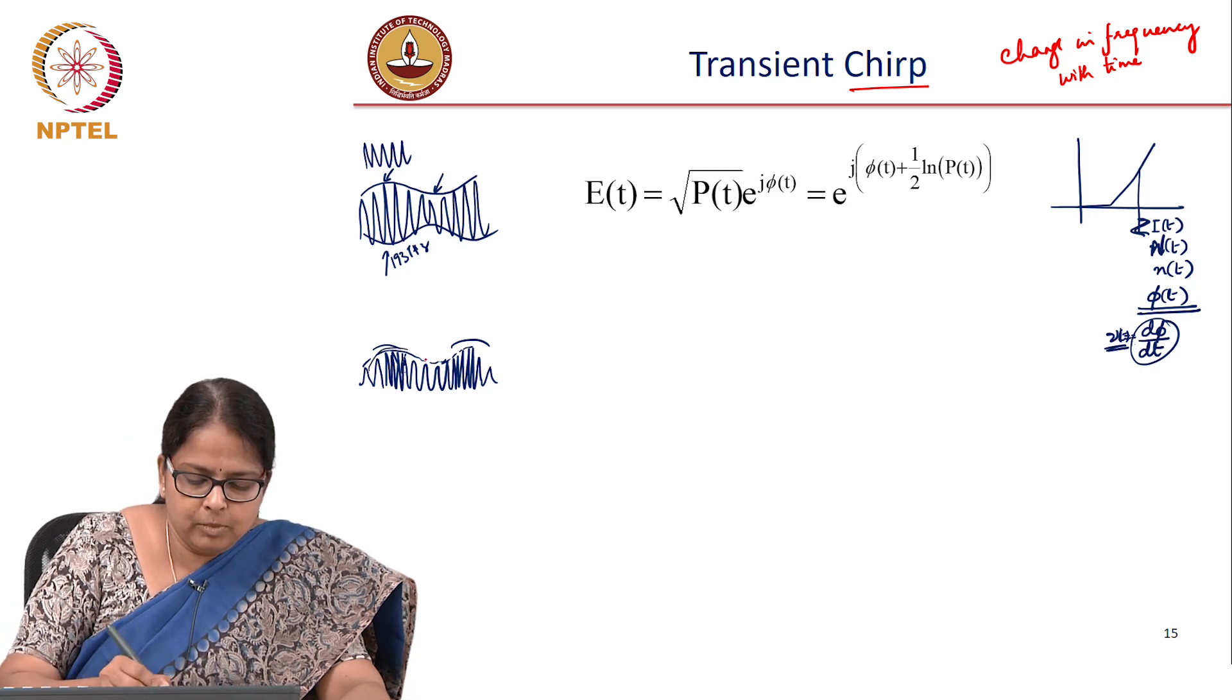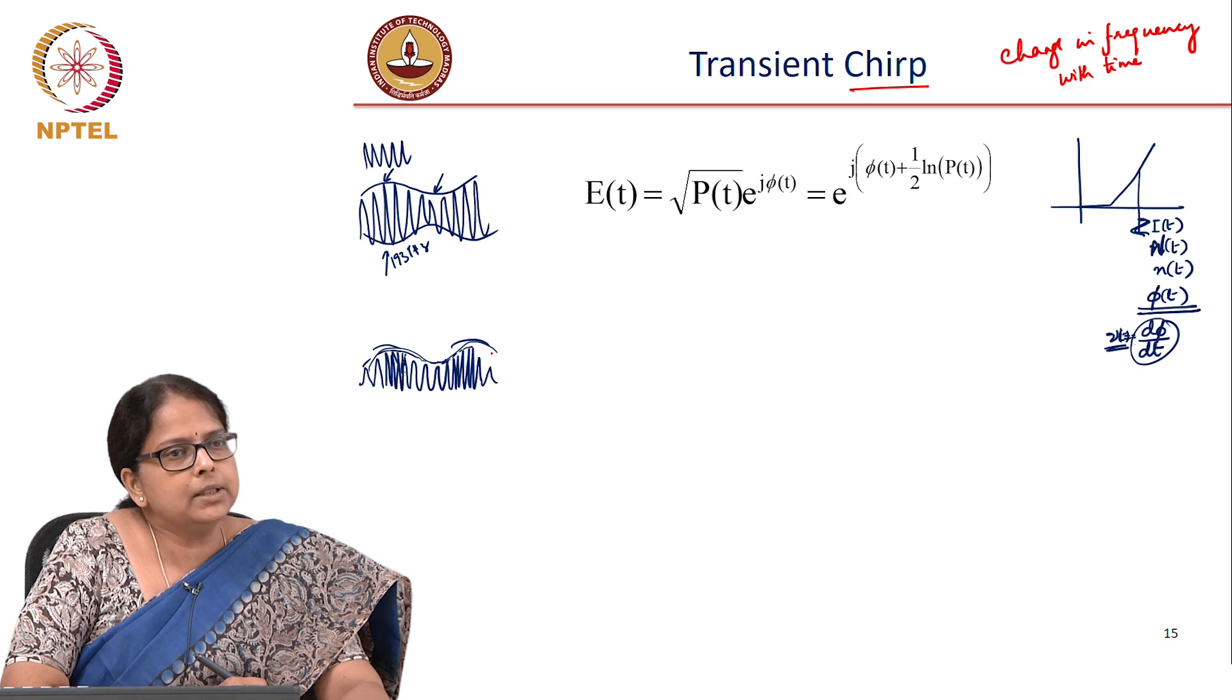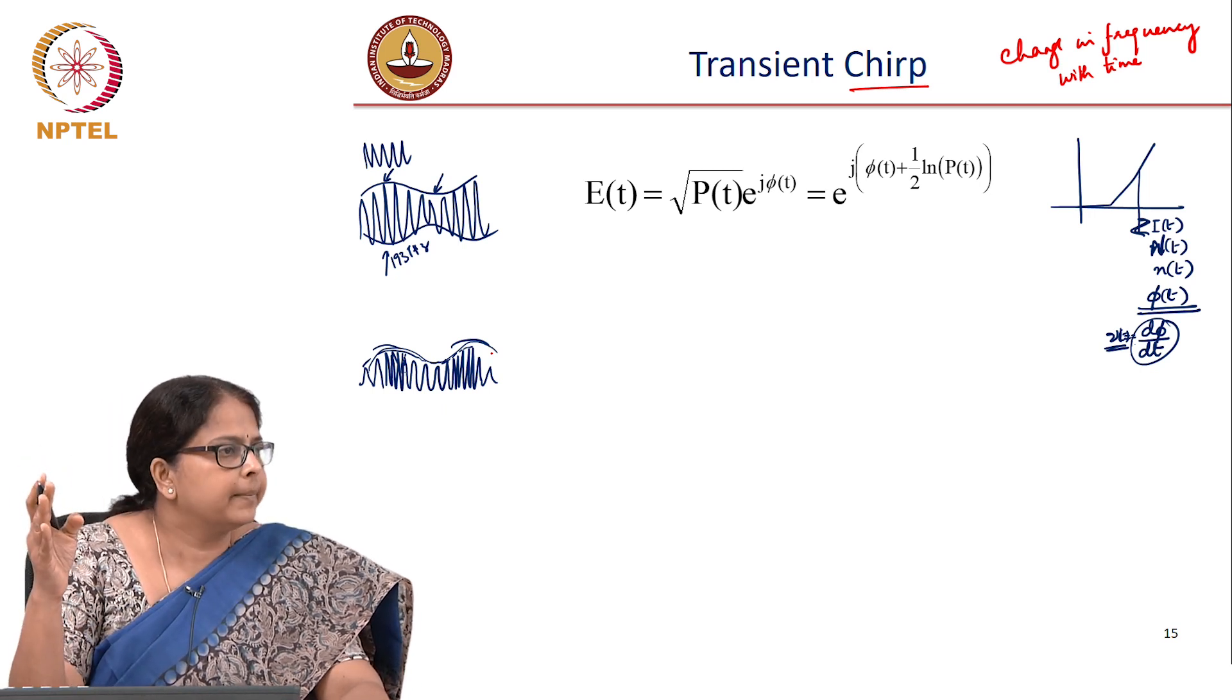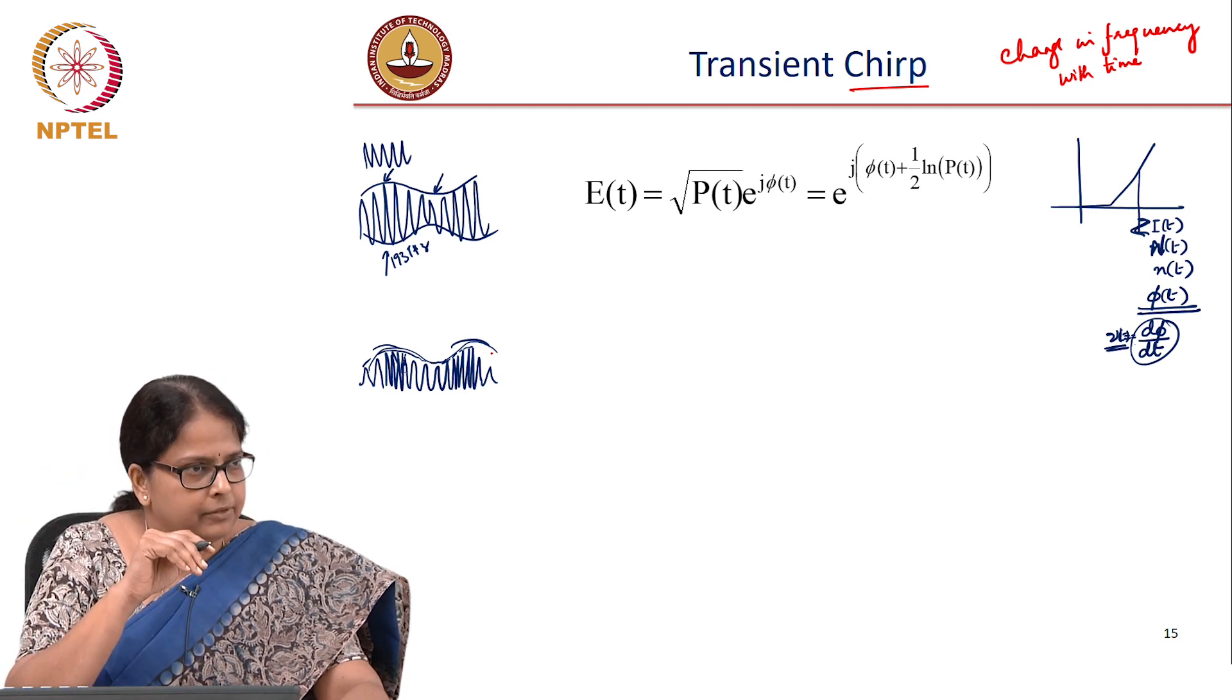You intended an amplitude modulation, but you are getting a frequency modulation. And of course, because there is a frequency modulation, the spectral width will start increasing. So the way it is quantified is the following.